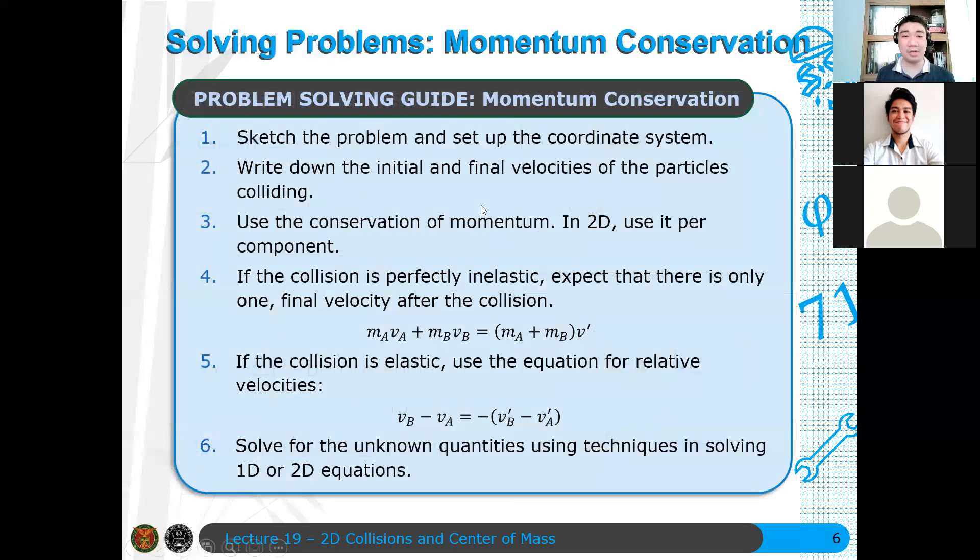Recall our problem-solving guide when we solve momentum conservation problems. The first thing we need to do is sketch the problem and set up the coordinate system. For 1D, it's not a big deal because we know positive is right, negative is left. Those are the only possible directions for head-on collision.